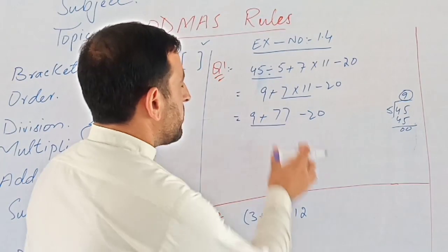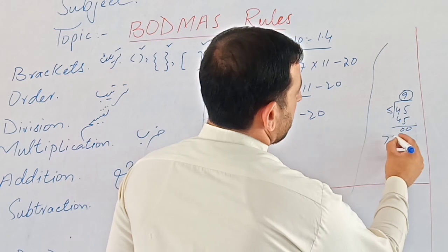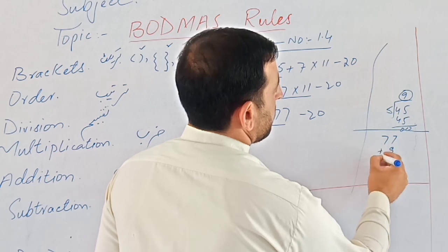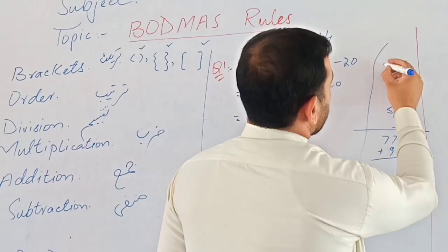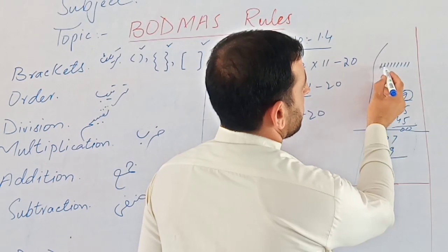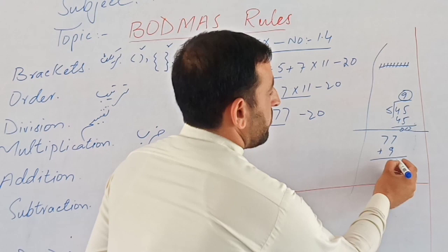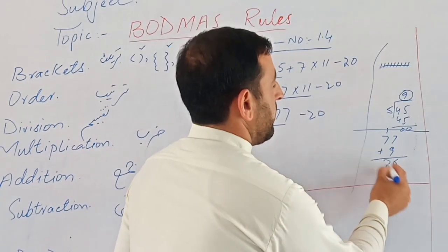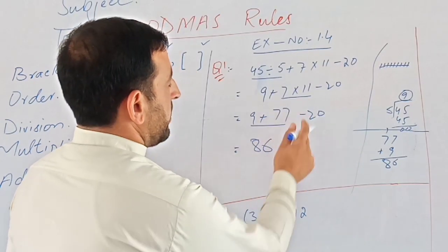Now we do addition. We have 9 plus 77. Counting: 9 plus 77 gives us 86. So 9 plus 77 equals 86. We write that down: 86.